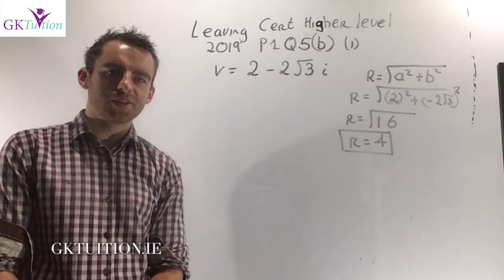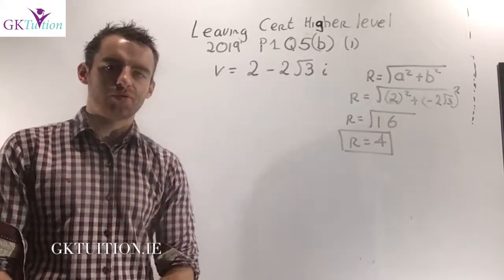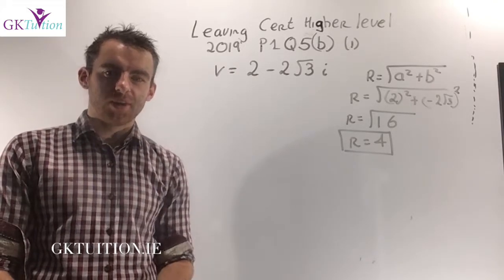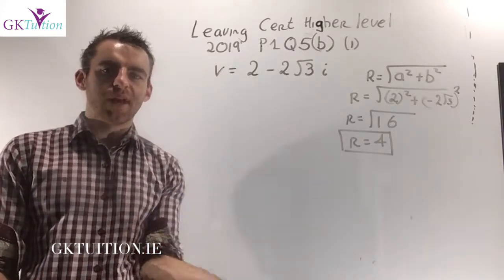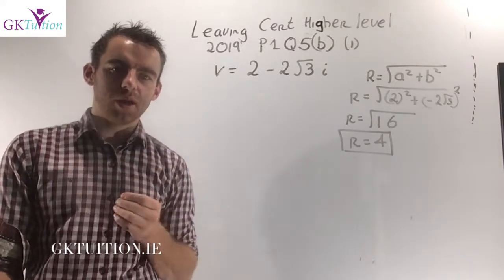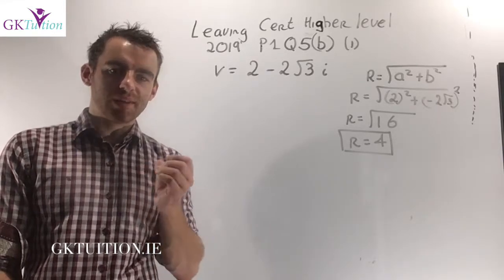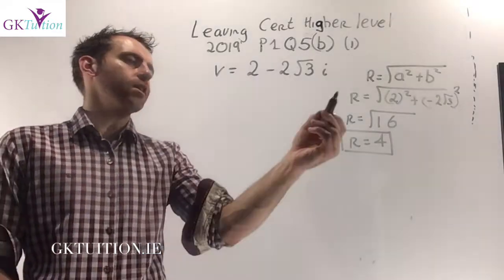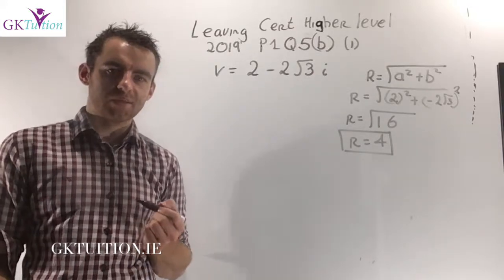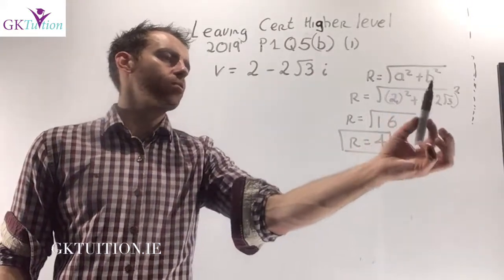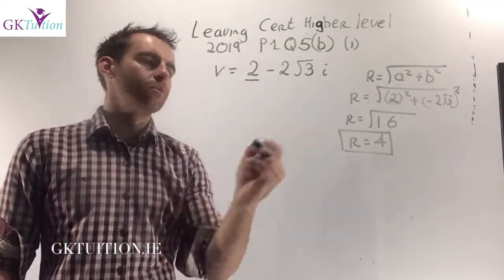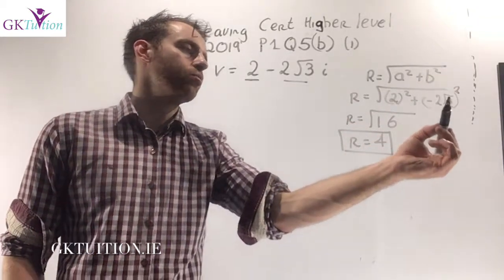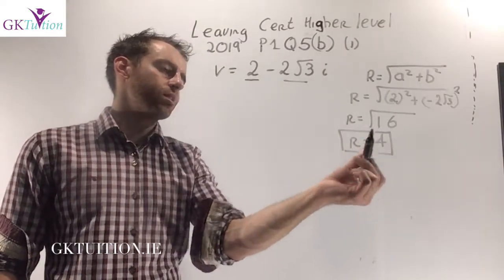In part B1 of this question, we're given the complex number v = 2 − 2√3·i, and we're asked to write it in the form r(cos θ + i sin θ) — in other words, polar form — with θ between 0 and 2π, so we use radians. To get polar form we need two things. The first is r, the modulus: r = √(a² + b²). Here that's √(4 + 12) = √16 = 4.